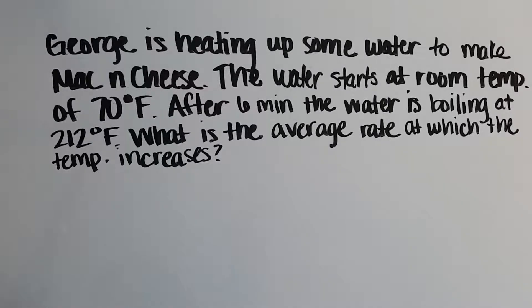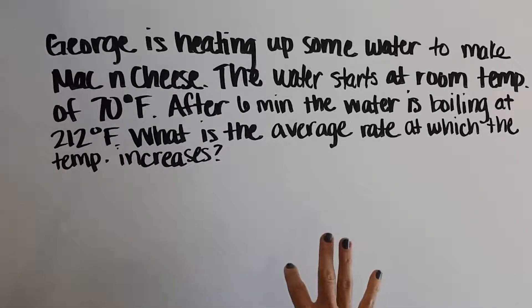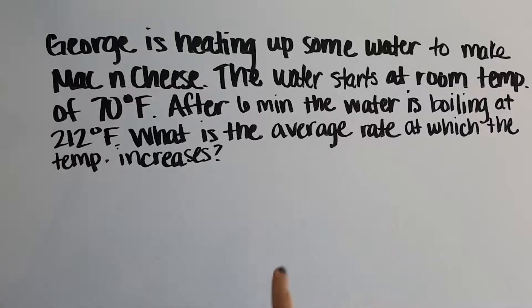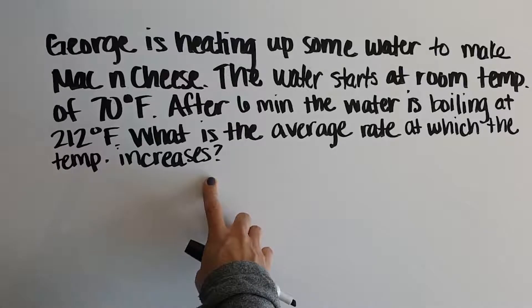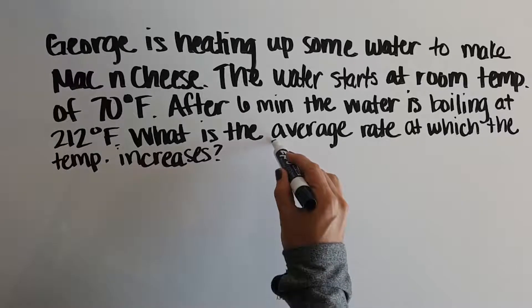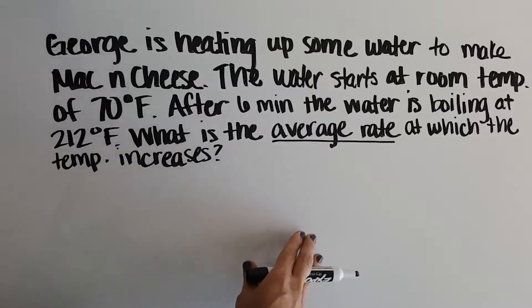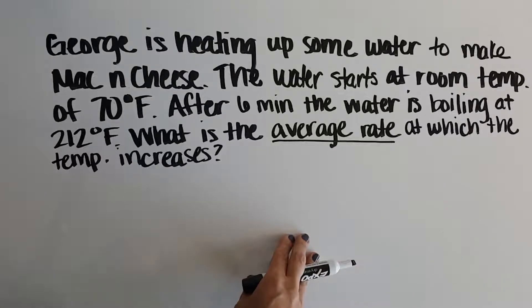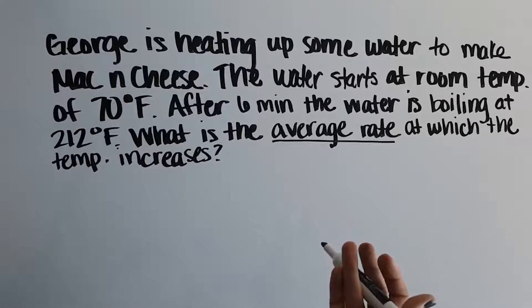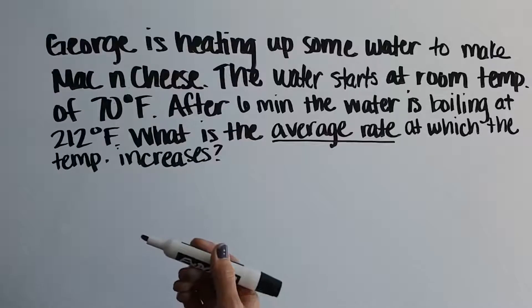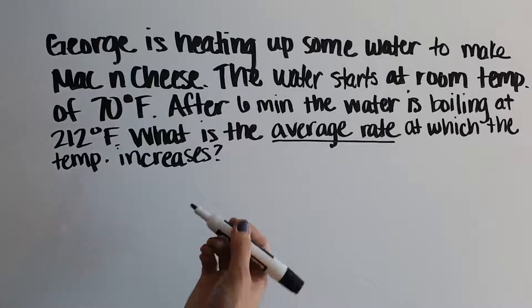Here's our situation: It's been a long day. George just got home from school and he's starving, so he's heating up some water to make mac and cheese. The water starts at room temperature, which is 70 degrees Fahrenheit, and after six minutes the water is boiling at 212 degrees Fahrenheit. We want to know what is the average rate at which the temperature increases. To figure out our rate of change, we need to identify the independent variable and the dependent variable.